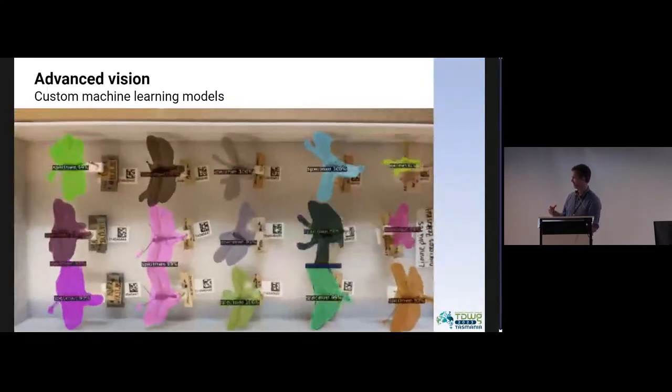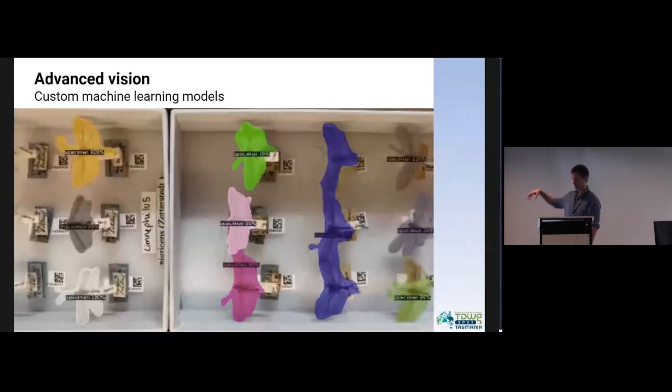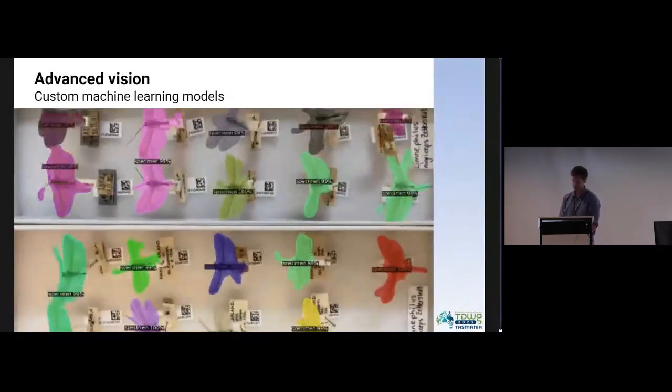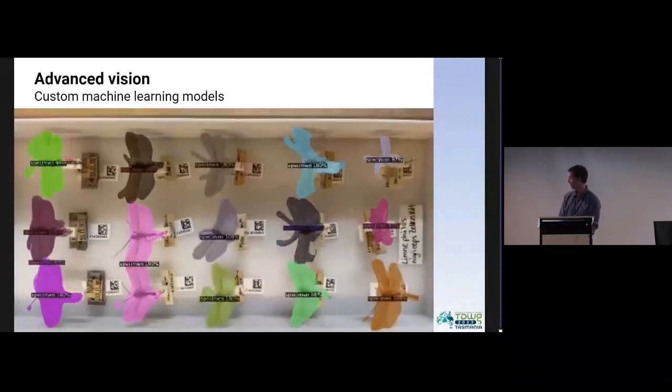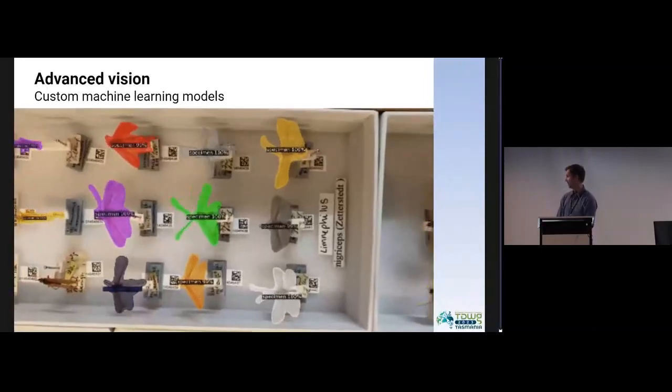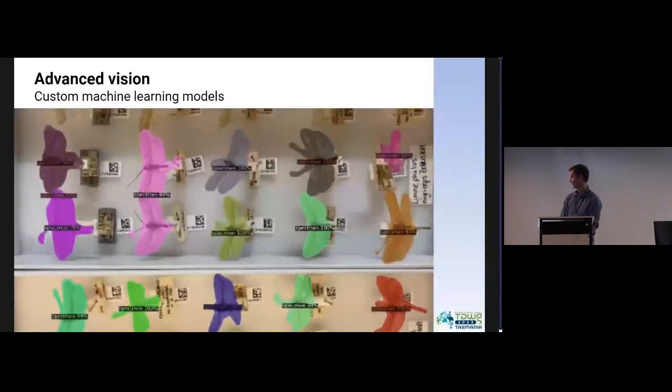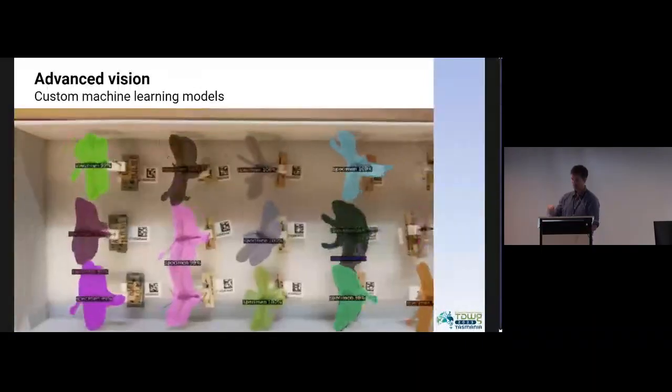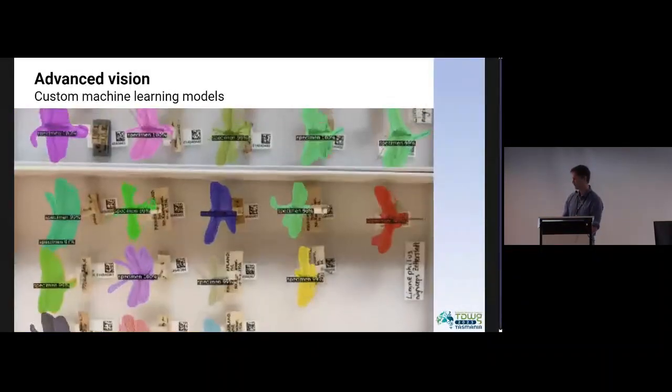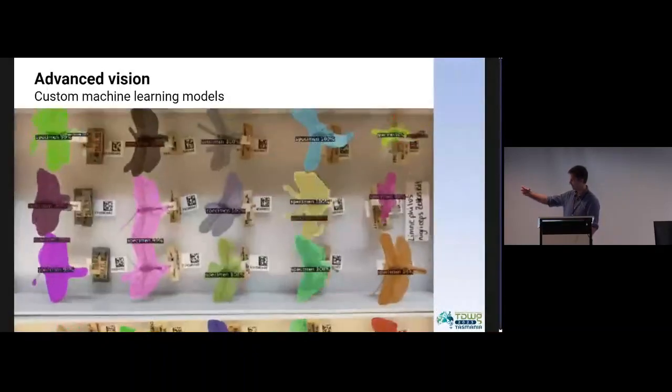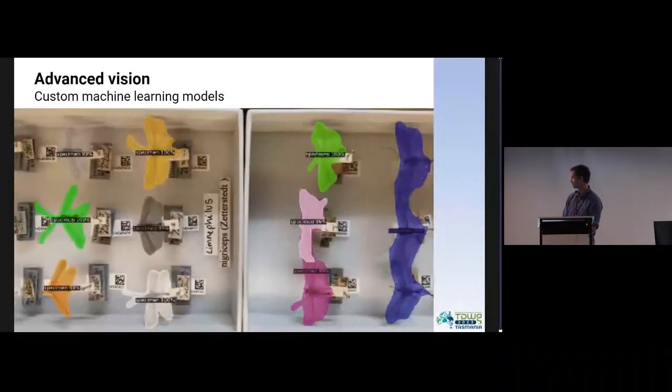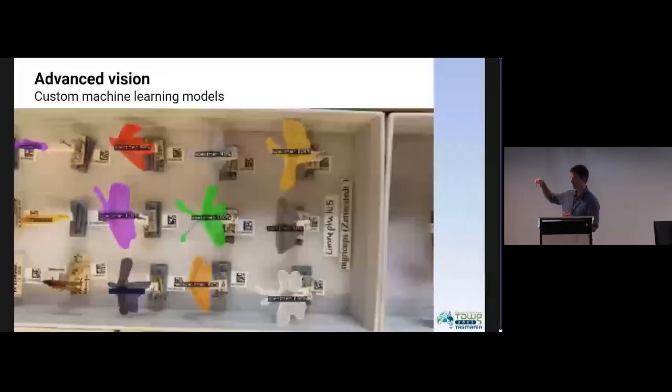The next stage in the process is to develop computer vision models. So this is a YOLO object detection model developed by my colleague and a student from UCL. And there are still a few errors, as you can see, where it's predicting conjoined specimens, which is going to be a problem when you're coming to grip it.